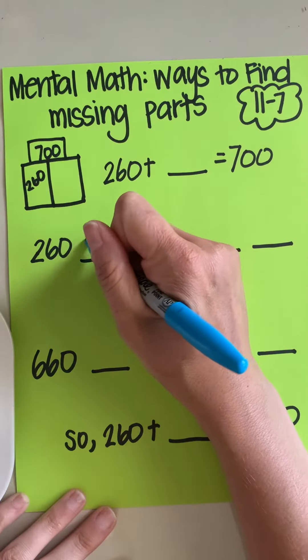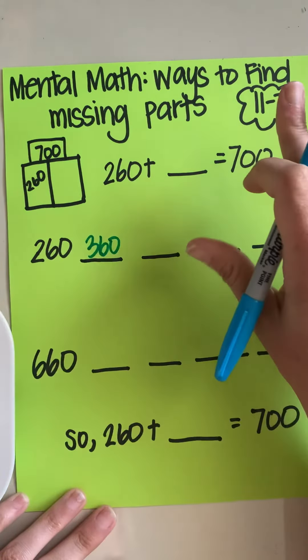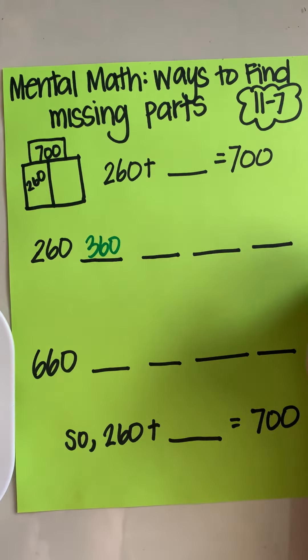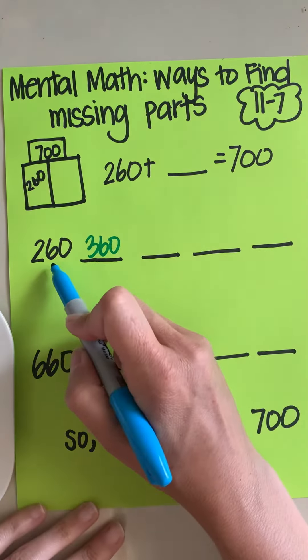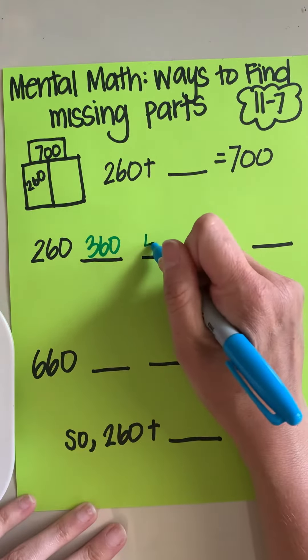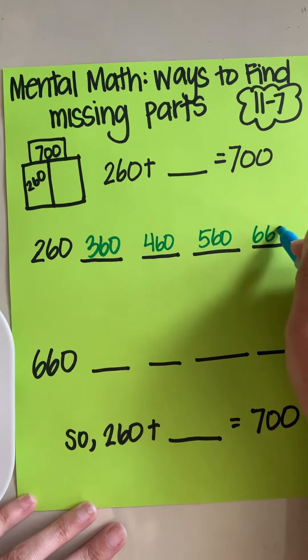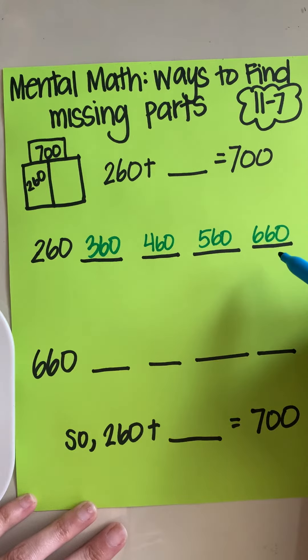So 260, 360. I'm going to pause. I cannot go above 700. If I'm finding the missing part, I cannot go above 700. So I'm going to go 260, 360, 460, 560, 660. Now I know that 660 is right before 700. If I go to 760, it's going to be too much.